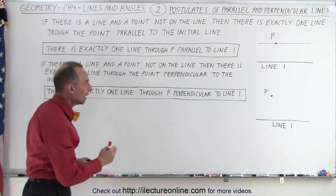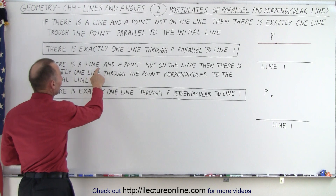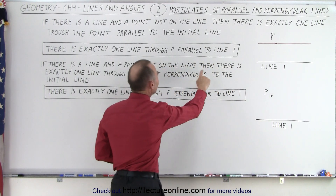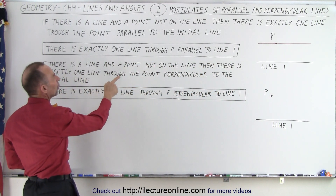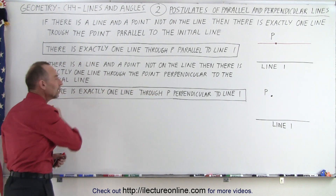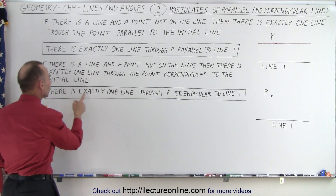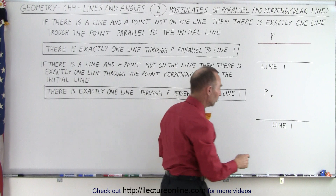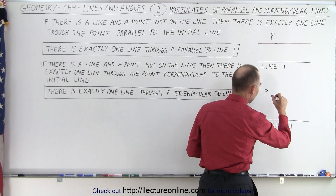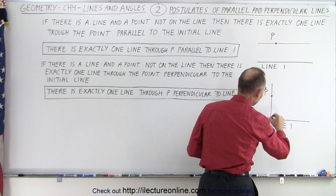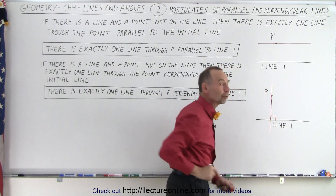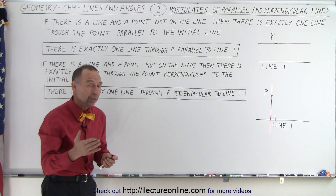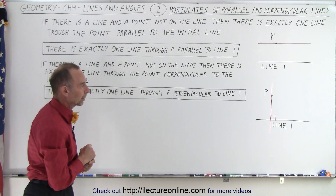Now we're going to do this again, but for perpendicular lines. If there is a line and a point not on the line, then there is exactly one line through the point perpendicular to the initial line. In short, there is exactly one line through point P perpendicular to line one. Here you can see we have a line and a point; we can draw only one line which goes through point P and which is also perpendicular to line one — just one line, not more than one. And so those are the two postulates, one for parallel lines and one for perpendicular lines.